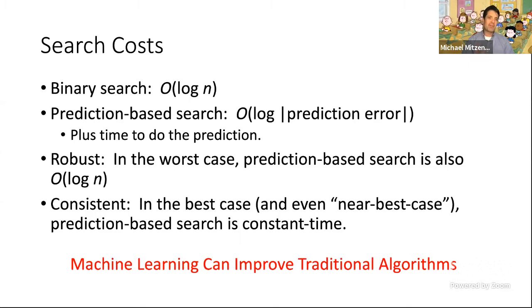This is a simple example showing that good machine learning can improve traditional algorithms. You could think of this as a variation on the long-known interpolation search, but here we put a machine learning framework on it, meant to illustrate how ML could improve traditional algorithms.